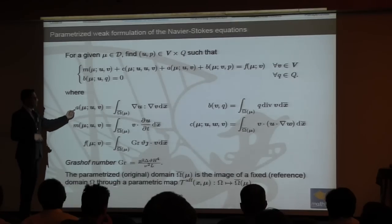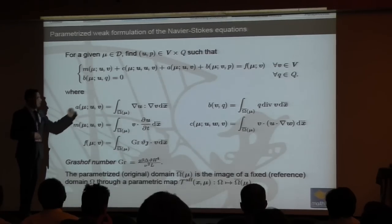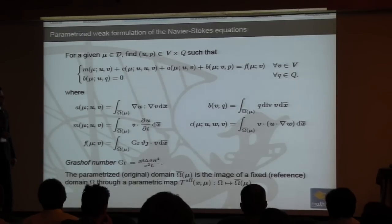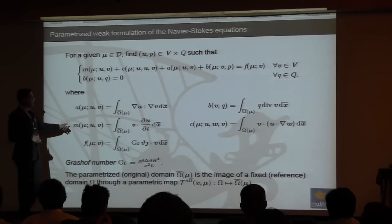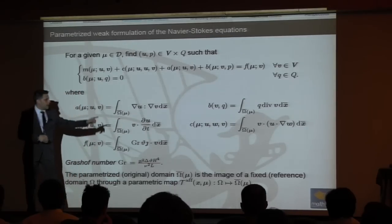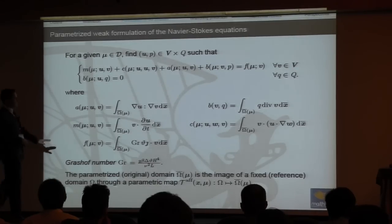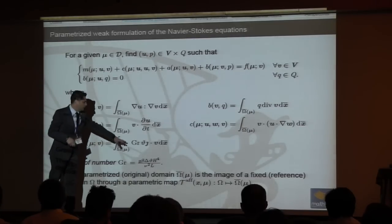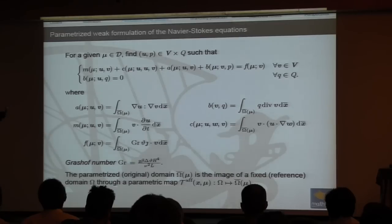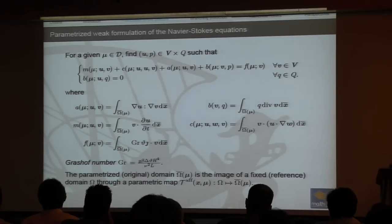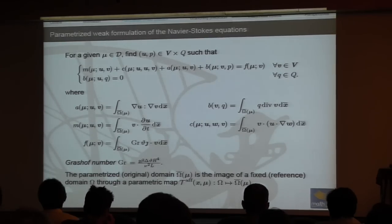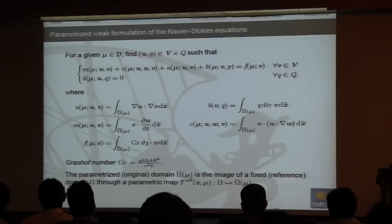The different terms in the formulation have distinct physical meanings. The bilinear form A accounts for viscous stresses depending on the parameter. We have pressure-divergence terms, terms carrying the time derivative of velocity, convective transport terms, and a right-hand side forcing field. For example, in a Rayleigh-Bénard problem, theta plays the role of temperature, and we have well-known benchmark problems like the roof benchmark problem. The Grashof number is a non-dimensional ratio between buoyancy and viscous effects.